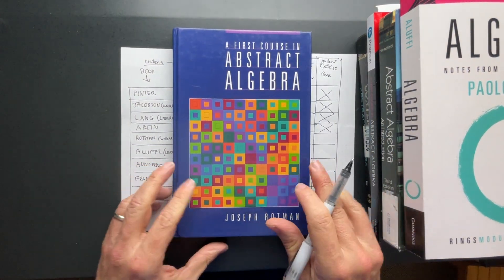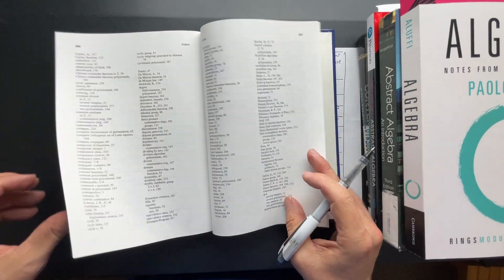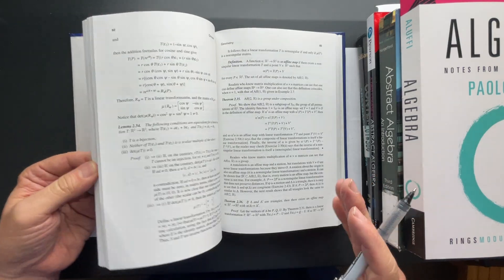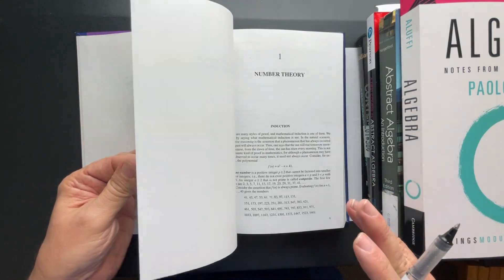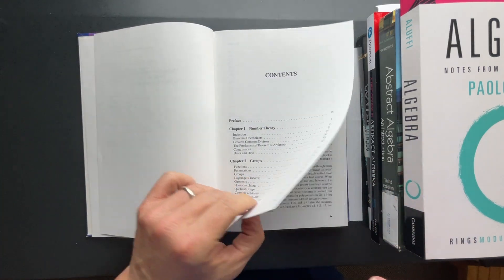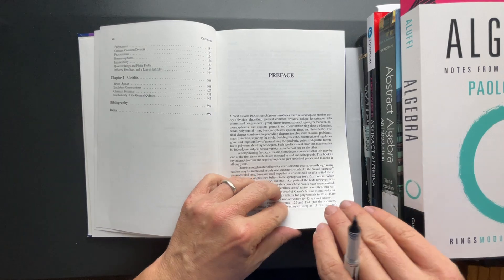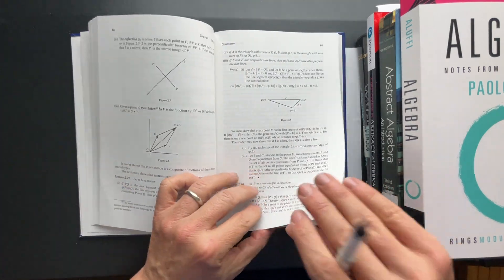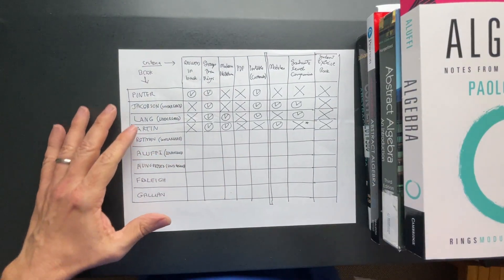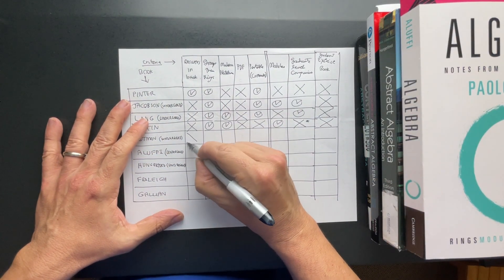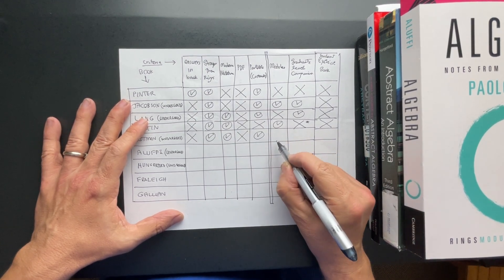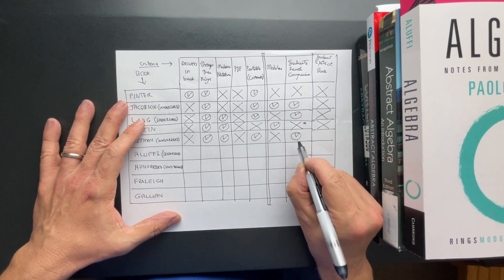Rotman doesn't have answers in the back, which is a shame because it's really readable — I've taken it on my commute. It does have a graduate-level companion. Rotman: no answers, groups then rings, modern notation, no PDF, definitely portable, no modules, has a graduate-level companion, no exercise book.